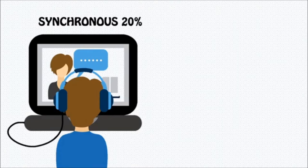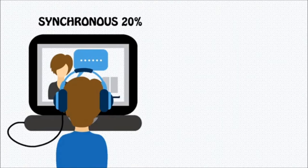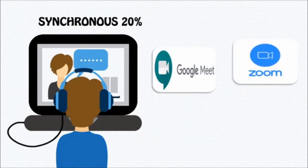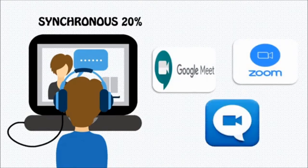Synchronous learning refers to all types of learning in which learners and instructors are in the same place and at the same time in order for learning to take place. This includes in-person classes and live online meetings where the whole class gets together using video conferencing applications such as Zoom, Google Meet, or even Facebook video conference.